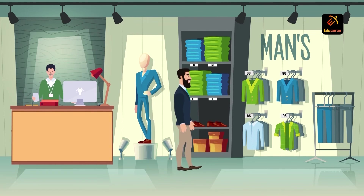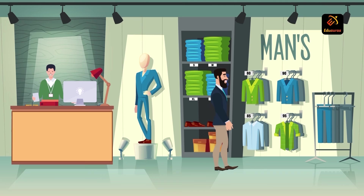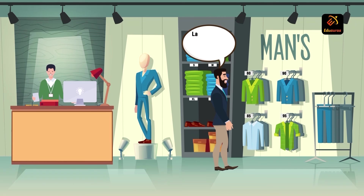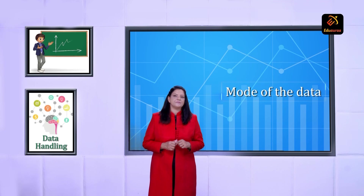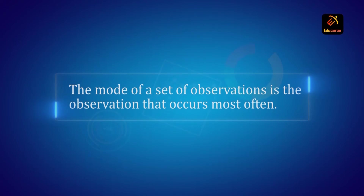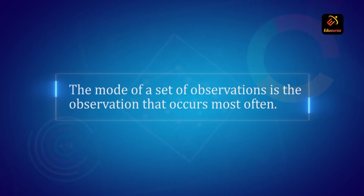Here the owner is concerned about the number of shirts of different sizes sold in the past. He needs to decide the shirt size that is sold the most — this is another representative value for the data. If the highest number of shirts sold is of size say 90 centimeters, this representative value is called the mode of the data. So the mode of a set of observations is the observation that occurs most number of times or most often.